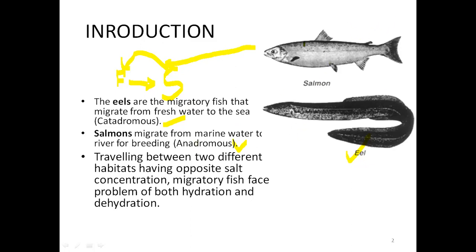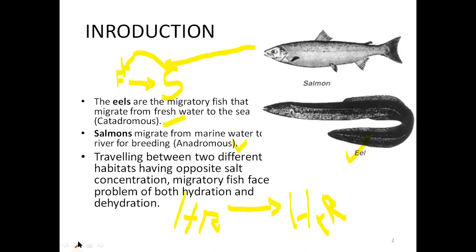Now we see how these fishes are going to face two different situations, because they live in two different habitats. Because of that they need to switch between one type of osmoregulatory mechanism — technically they need to switch between a hyper-regulator and a hypo-regulator. This switching between hypo and hyper regulation is the important and interesting thing about these fish.